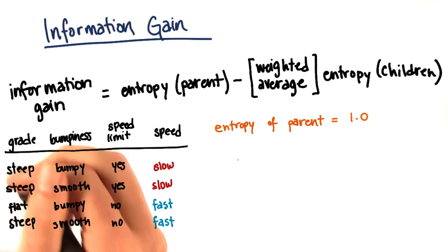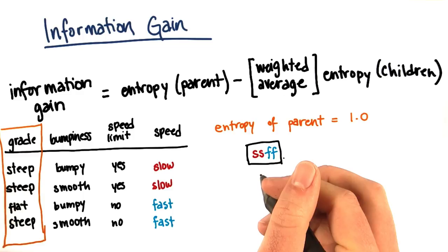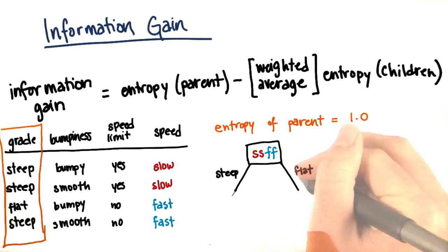We'll start by doing an information gain calculation for the grade. Here's my parent node with all four examples in it. Now I split based on the grade. The first question for you is: how many examples are going to go in the steep branch? Write your answer in the box.